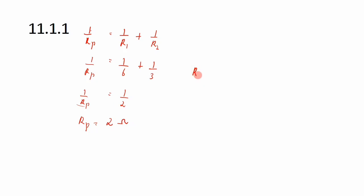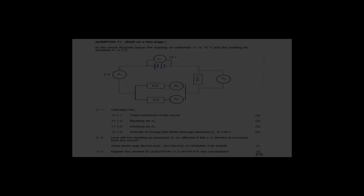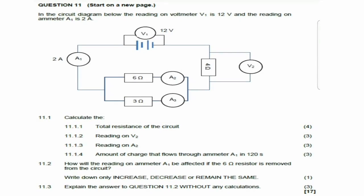To calculate the total resistance, we add the parallel resistance and the series resistance: 2 ohms plus 4 ohms, giving a total resistance of 6 ohms.